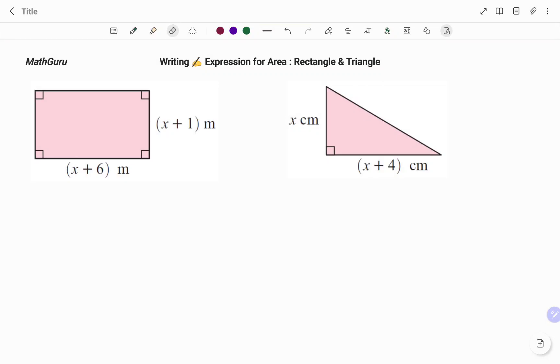Hi everyone, this is your Math Guru. In this video I'm going to show you how to write expressions for the area of the following shapes. In the first example, we have a rectangle with dimensions x plus 6 meters and x plus 1 meter.